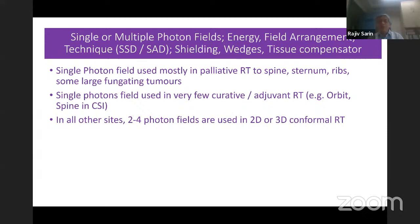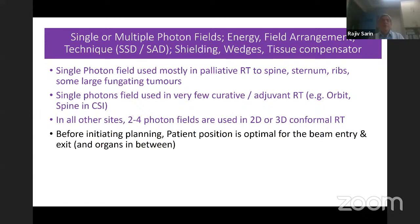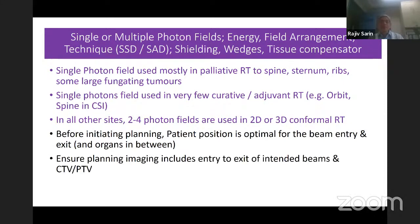Before initiating planning, make sure the patient position is optimal for the beam arrangement, and ensure the planning imaging includes the entry and exit of the intended beams and the CTV/PTV — not just the region of interest, but also where the beam will exit, because there may be sensitive tissue such as the thyroid or the lens in the exit path.